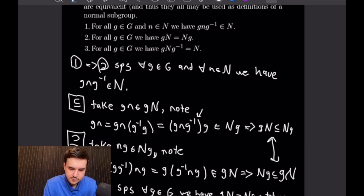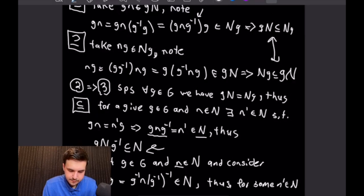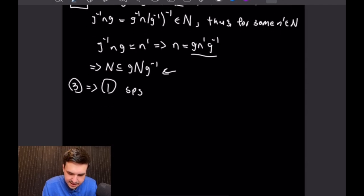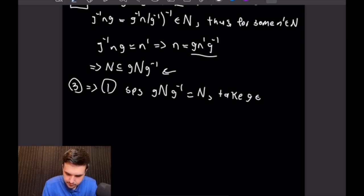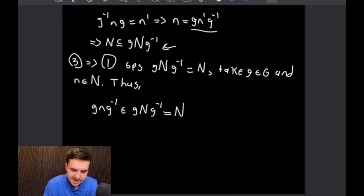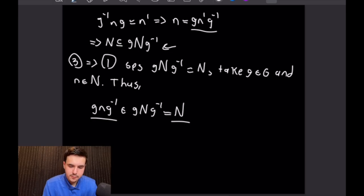Now that we've proved 1 implies 2 and 2 implies 3, we just need 3 implies 1. This proof goes rather quickly. We suppose gNg⁻¹ equals N, then take g in G and n in N. It immediately follows that gng⁻¹ is in gNg⁻¹, which equals N. So gng⁻¹ is in N, completing the proof. All three statements are equivalent.